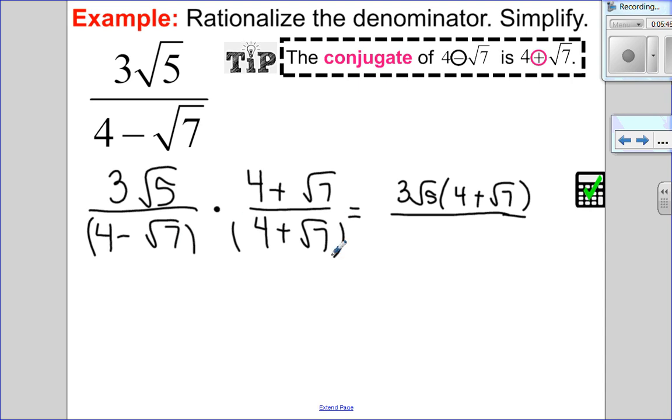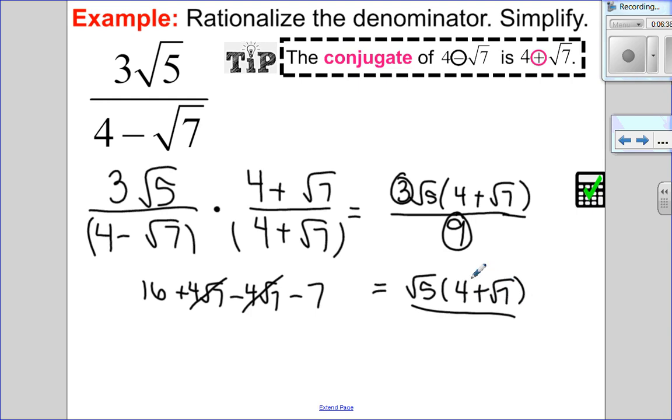So I know that I'm creating a difference of squares. So I have 4 times 4 is 16, 4 times positive root 7, 4 times negative root 7 is negative 4 root 7, and negative root 7 times root 7. Well, it's negative, and root of the same thing times root of the same thing is the same thing without the root. So you can see my middle term is gone by creating a difference of squares, and then I'm just left in the denominator with 16 minus 7, which is just 9. Okay. So I'm almost done, but I notice that 3 and 9 have a common factor. So 3 and 9 have a common factor of 3, so let's divide each by 3. So 3 root 5 divided by 3 is just root 5, and 9 divided by 3 is 3.